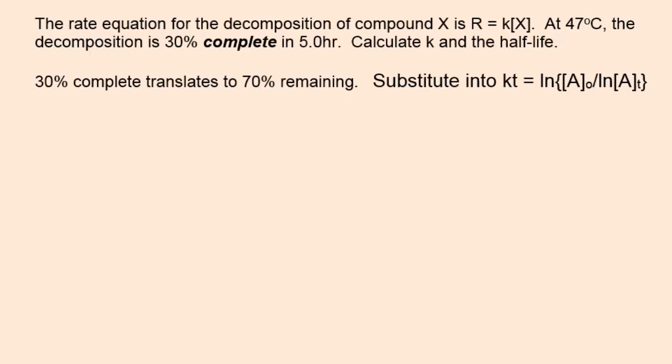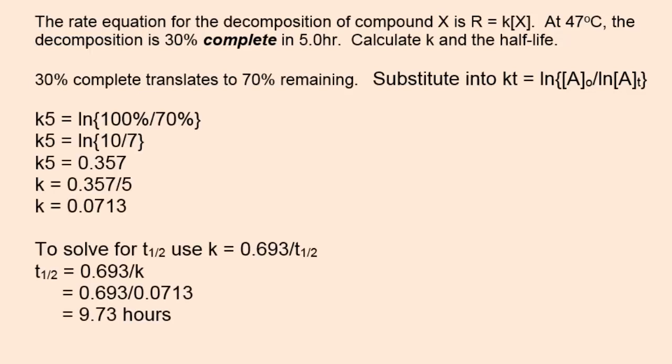30 percent complete translates to 70 percent remaining. Substitute values into the first-order integrated rate equation. When doing this, it's determined that K is 0.0713. Now we could use the half-life equation to determine the half-life. Rearranging, half-life equals 0.693 divided by K, and the half-life is 9.73 hours.